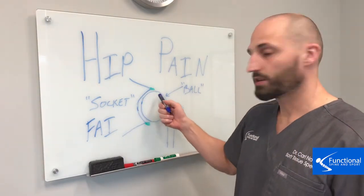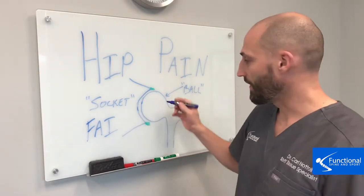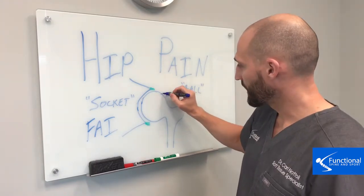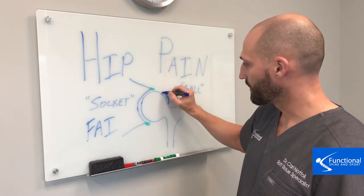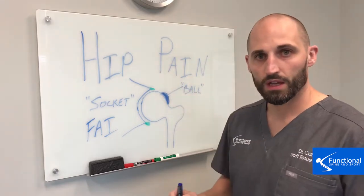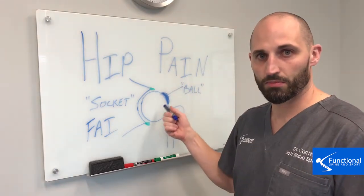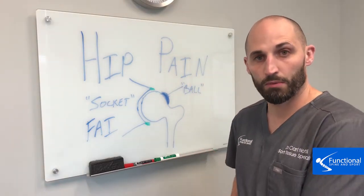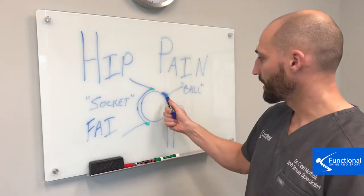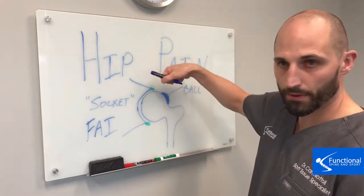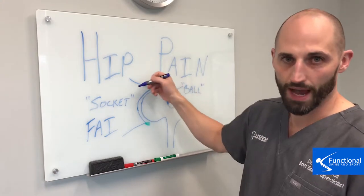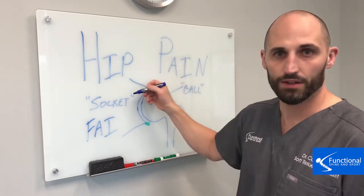One of the ways you can get this is on the ball part, or the femur part — you'll actually get extra bone that grows here. This is extra bone that can grow on the femur part, the ball part. And you can imagine if this is rotating up, this is going to hit the top of that. That's bad news.